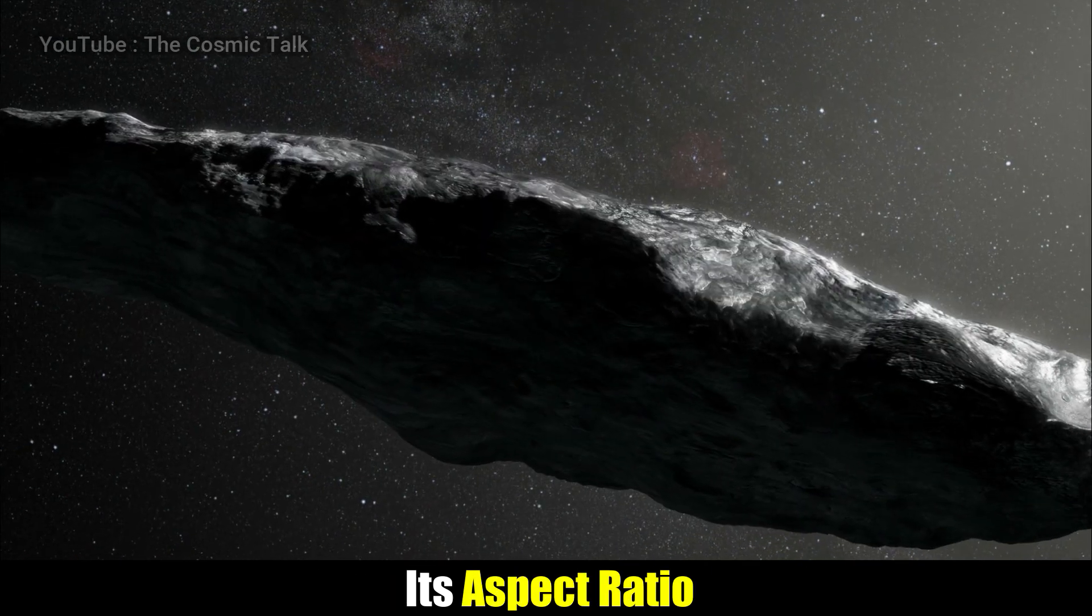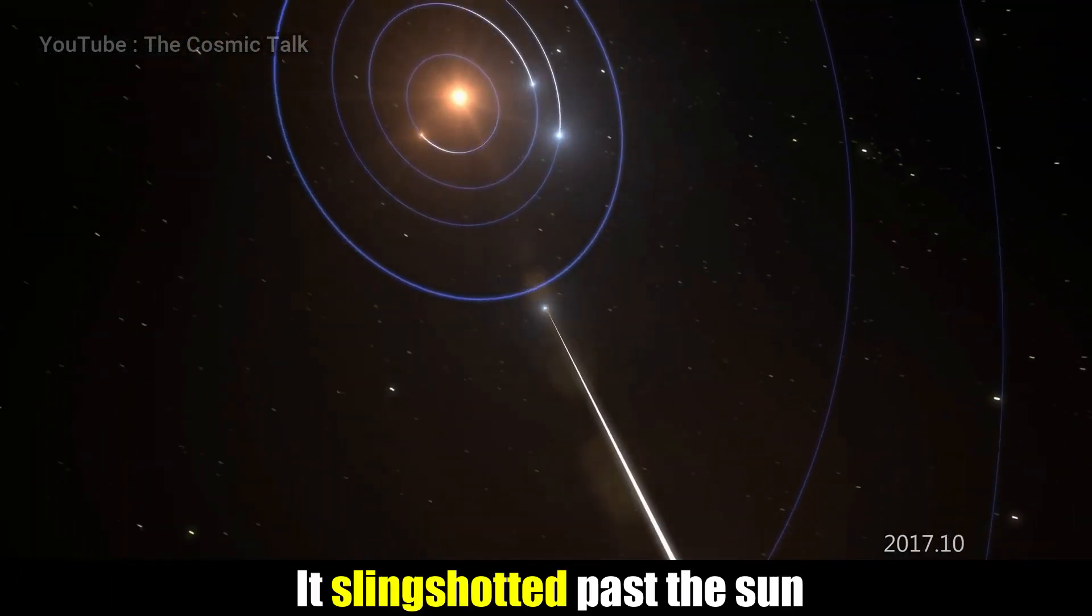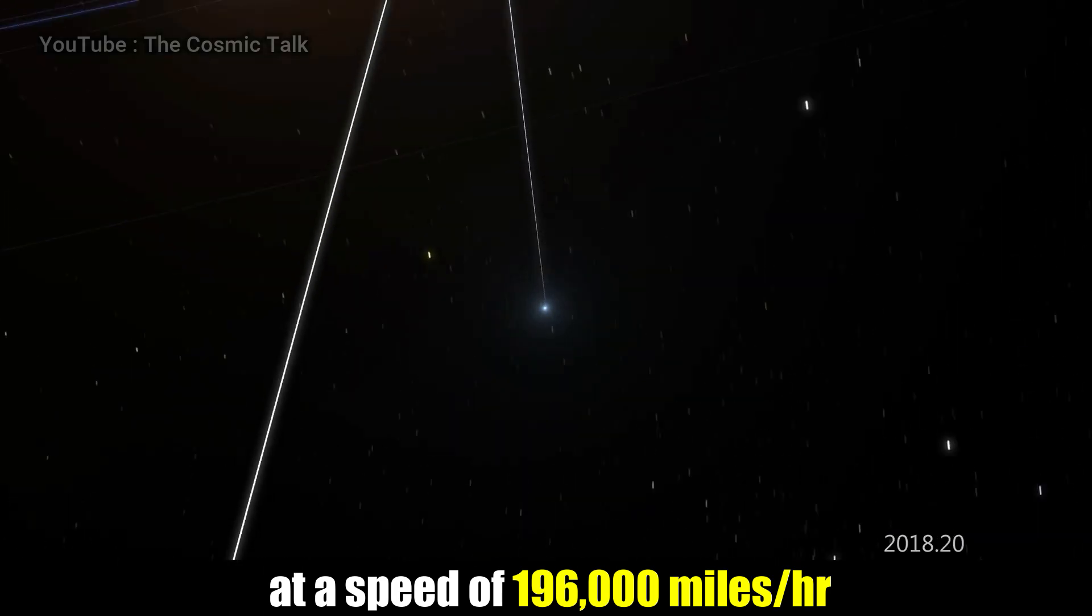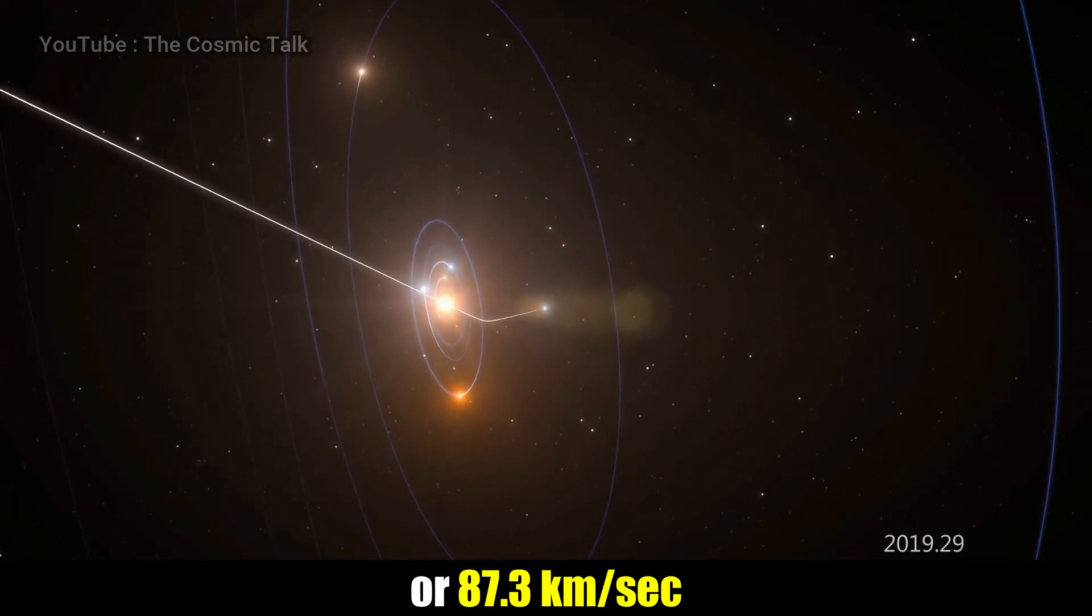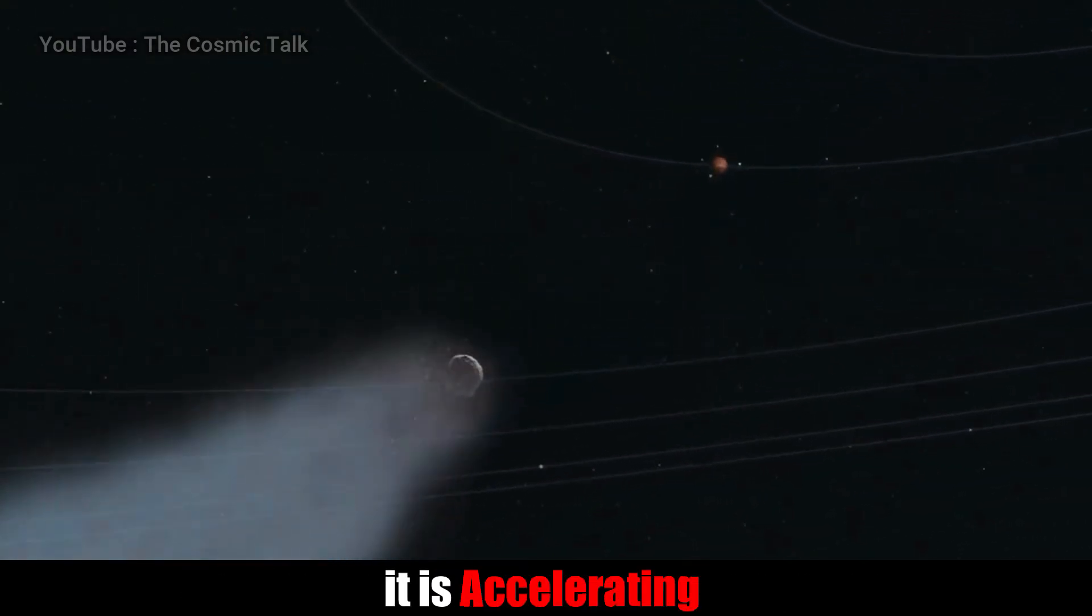Its aspect ratio is greater than any asteroid or comet observed to date. It slingshotted past the sun at a speed of 196,000 miles per hour, or 87.3 kilometers per second. And instead of having a constant speed, it is accelerating.